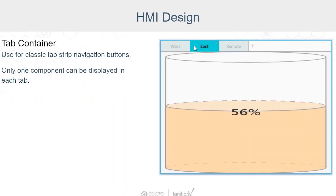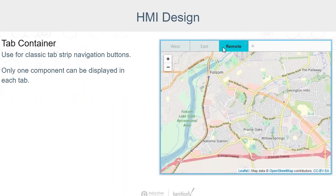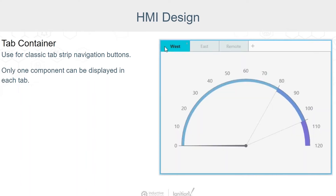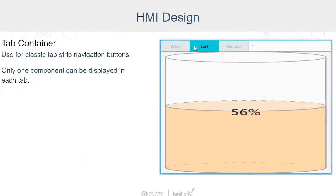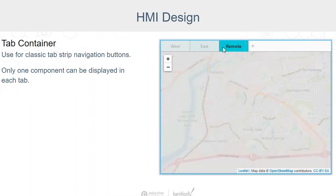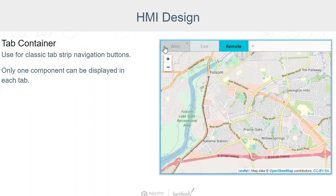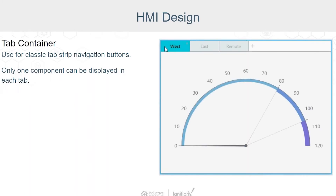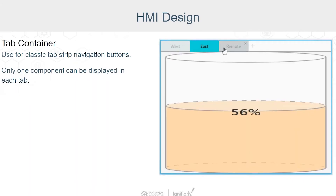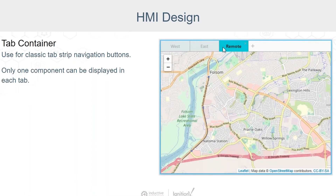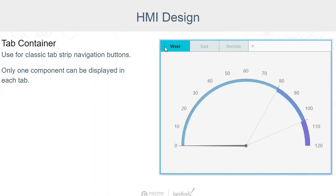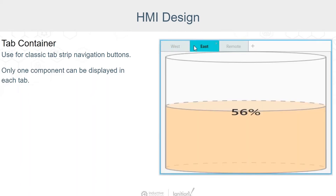Next is the tab container. Use this when you want classic tab strip navigation. This is often useful for a complex device or process. For example, maybe one tab will have set points for a device, and the other tabs will have charts, history, or real-time status for that device. There is only one component per tab, but this component could be an embedded view, which would also include other components.